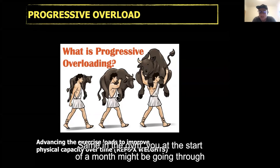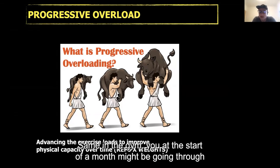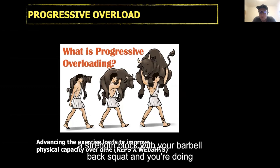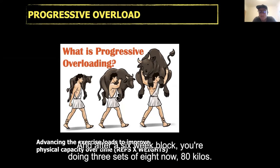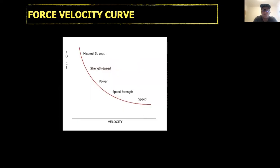Same in the gym. At the start of a month, you might be going through a strength block with your barbell back squat and doing three sets of eight at 60 kilos. And after a six-week block, you're doing three sets of eight at now 80 kilos.